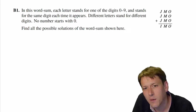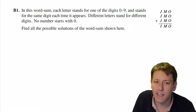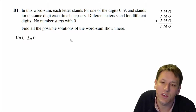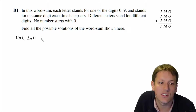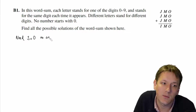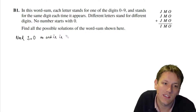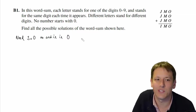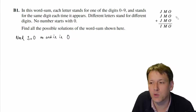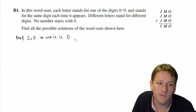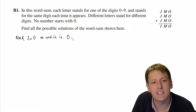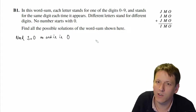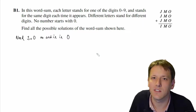Starting with the numbers on the right: we must have three times whatever O is, ending with its last digit as O. If you think about what happens when you do three times a number, the only way you can get it to end in the same number would be zero and five. For example, three times one is three — it doesn't end in one. Three times seven is 21 — that ends in one, not seven.